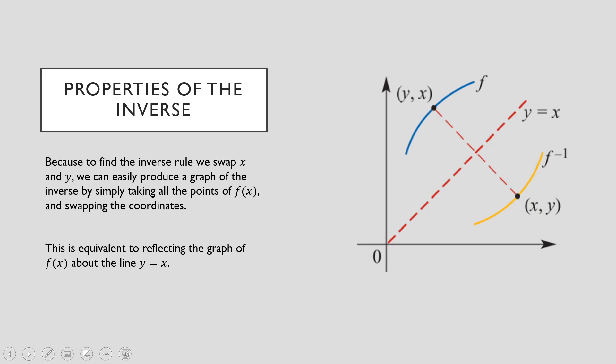So first of all, remember in the last video to find the rule for the inverse, what you're doing is you're swapping the values for x and y. Now in terms of a graph, if you were to swap the values of x and y, you're swapping the coordinates of x and y. And what's going to happen is your original graph — let's say this blue line here — is going to get reflected along this dotted line, which is the line y equals x. And it will produce the graph of the inverse here, which is this yellow line, because all you're doing is swapping the x and y coordinates.